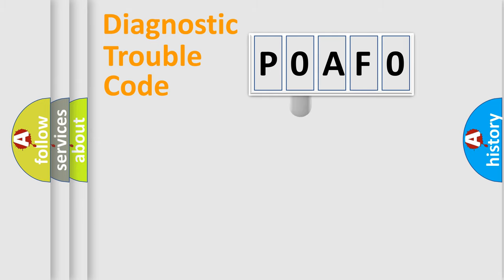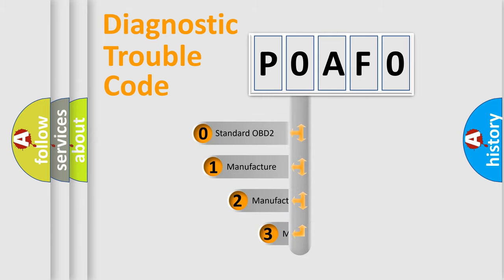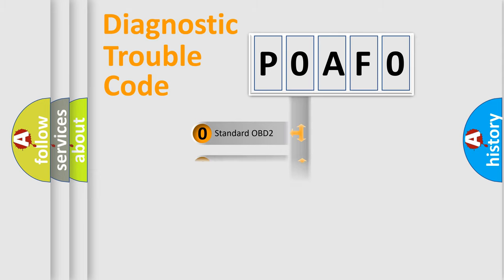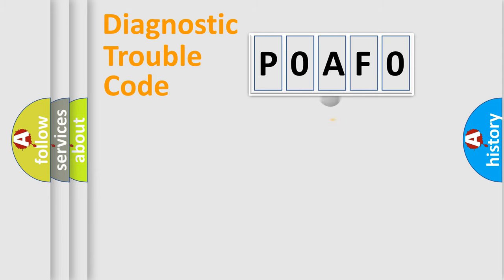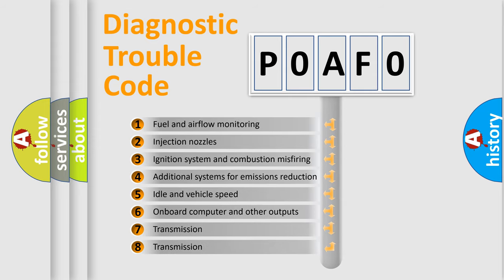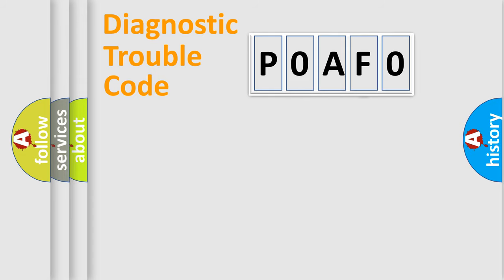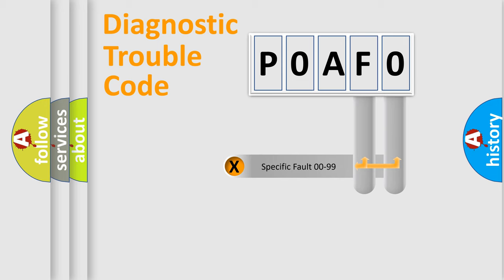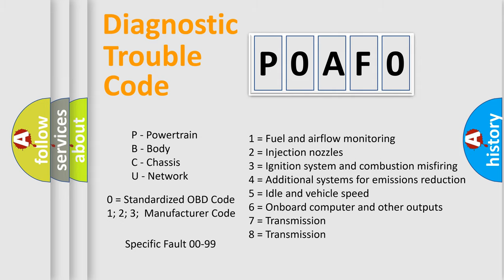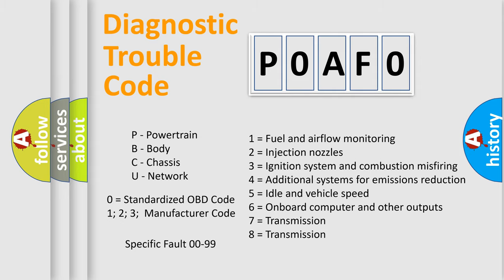This distribution is defined in the first character of the code. If the second character is expressed as zero, it is a standardized error. In the case of numbers 1, 2, or 3, it is a manufacturer-specific error expression. The third character specifies a subset of errors, and this distribution is valid only for the standardized DTC code. Only the last two characters define the specific fault of the group — but this division is valid only if the second character is zero.